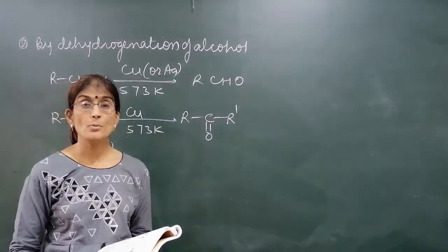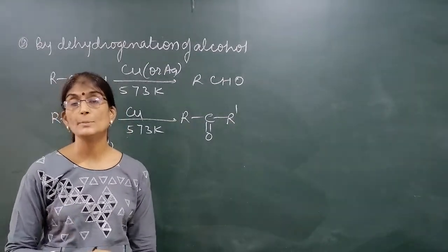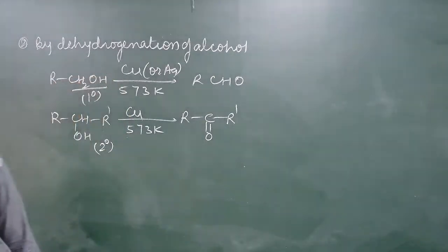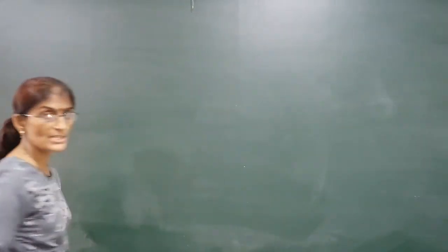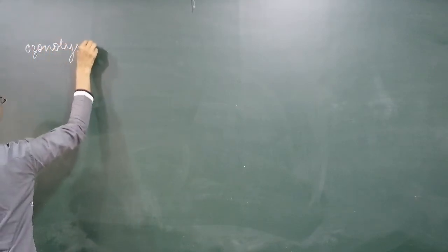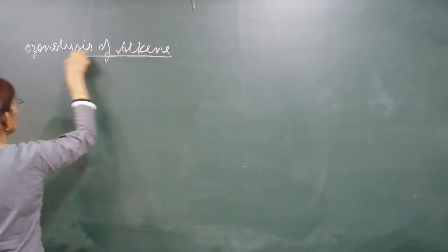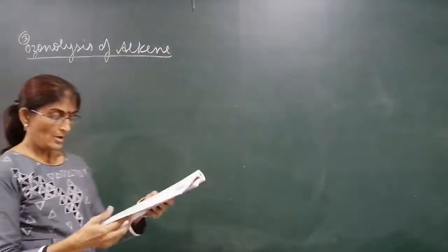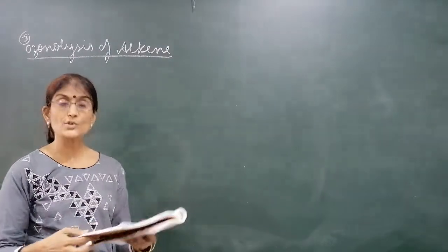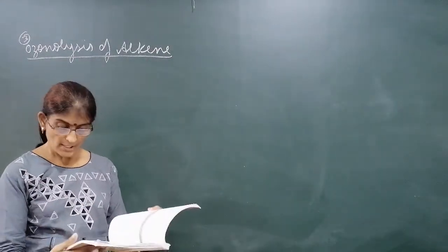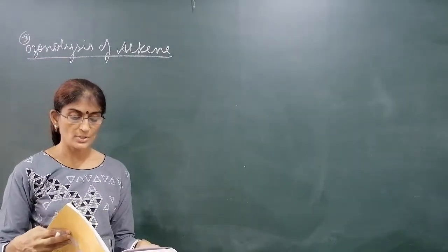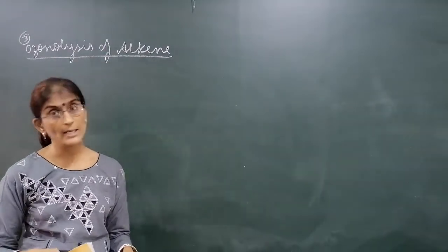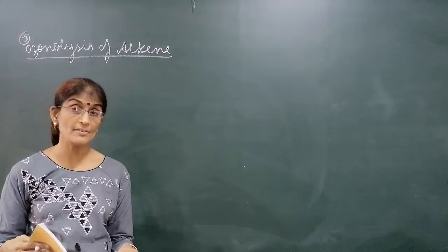The third method is from ozonolysis of alkenes - this is also from 11th standard. Alkene undergoes ozonolysis: first it forms an intermediate ozonide, which is then reduced by zinc dust and water to give either aldehydes or ketones or both, depending upon the type of alkene. This is a very important reaction from the hydrocarbon chapter.